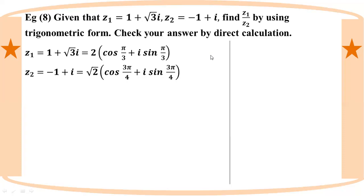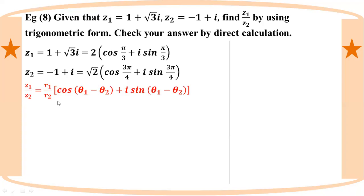The result is r1 by r2 times cos(theta 1 minus theta 2) plus i·sin(theta 1 minus theta 2).